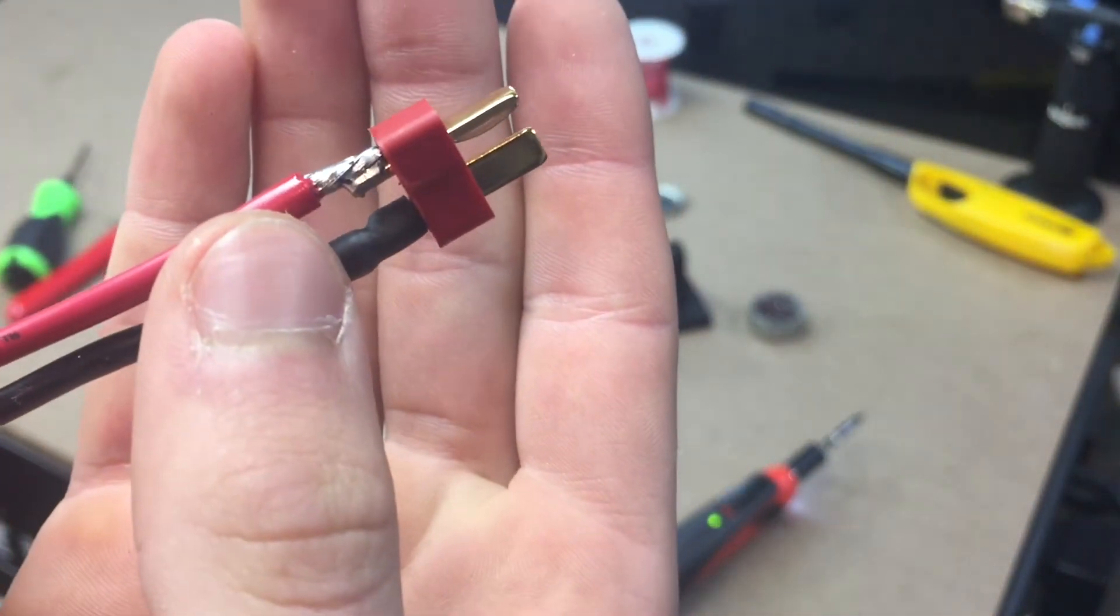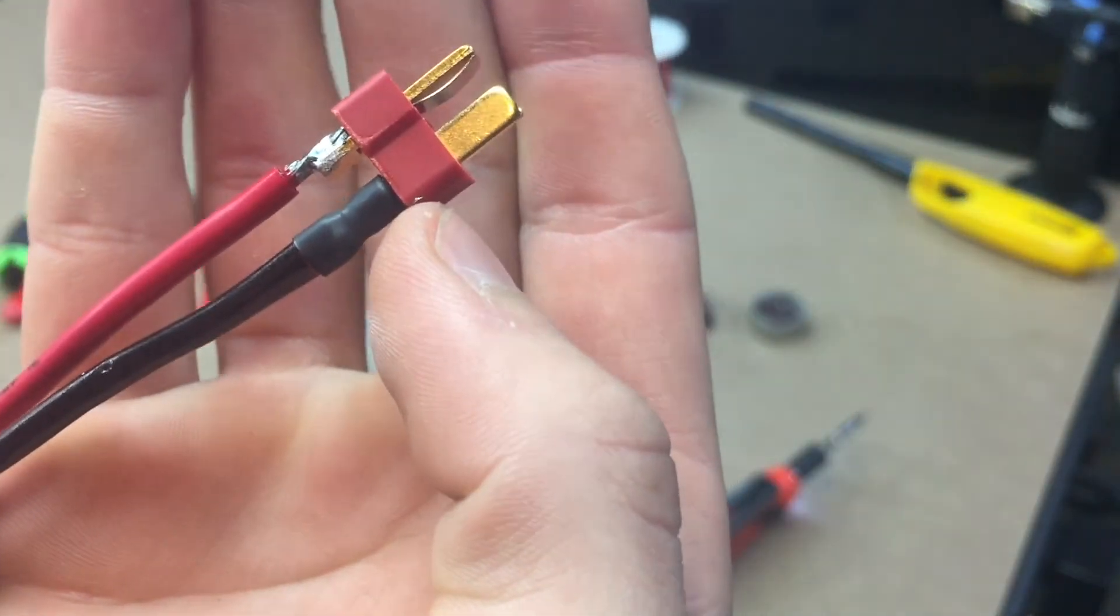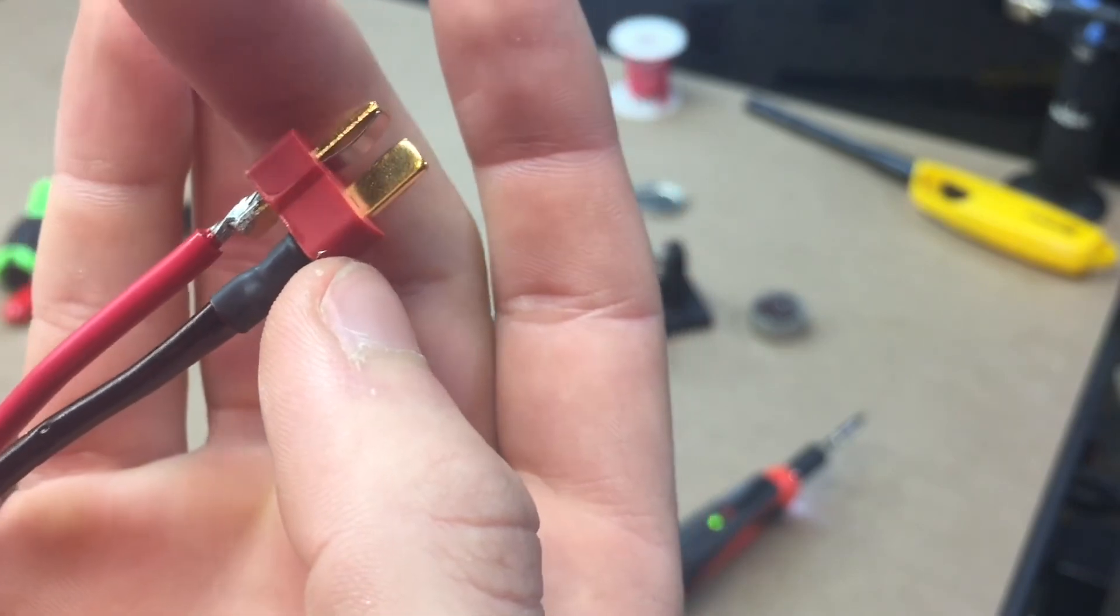It doesn't have to look perfect because we're going to cover it in shrink wrap. Like this one, I actually just did this joint a few minutes before I turned on the camera.